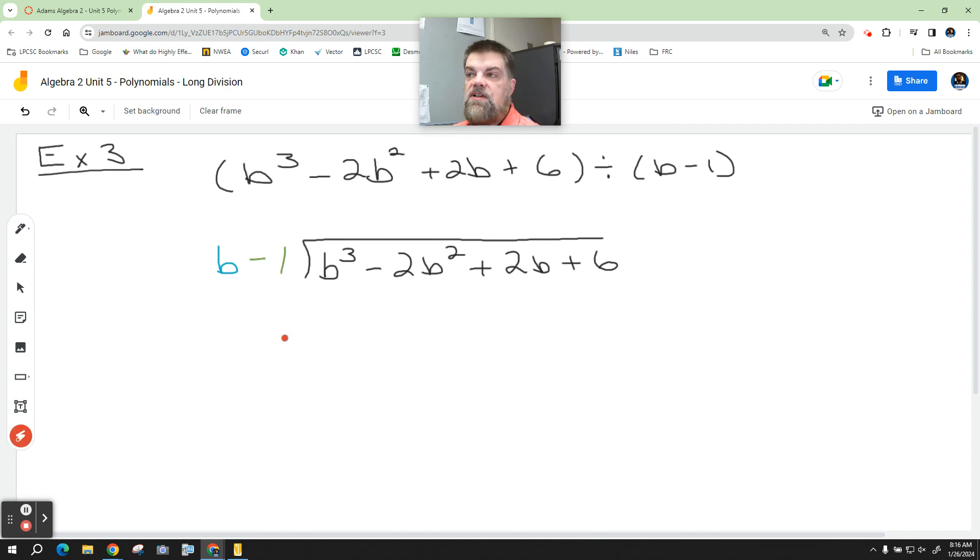So again, we're still thinking, what do I do with this to get this? So what do I multiply b by to get b cubed? So I'm going to multiply this to get this. b squared. So up here, I'm going to say b squared. Now, here's the interesting thing.